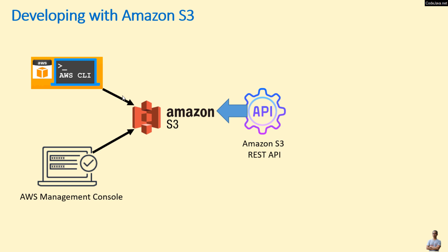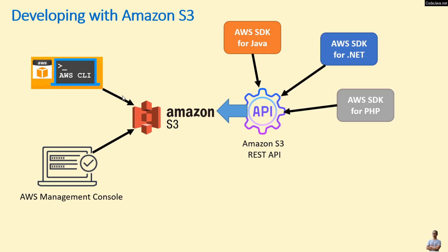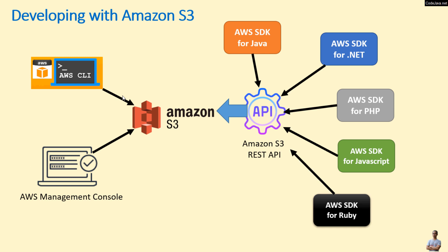For developing applications with Amazon S3, you can use the Amazon S3 REST API directly, or use the AWS SDK for your favorite programming languages such as Java, .NET, PHP, JavaScript, Ruby, and Python.